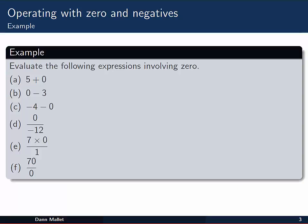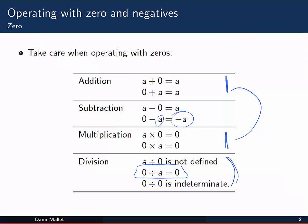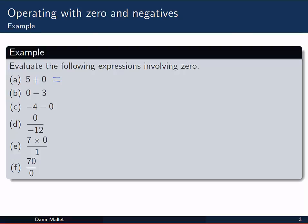So let's take a look at an example. We've got to evaluate the following expressions involving zero. Well, let's just see. A, we've got five plus zero. We know from back here in our set of rules, anything plus zero is that anything. And I'm sure you can probably do that one yourself as well.